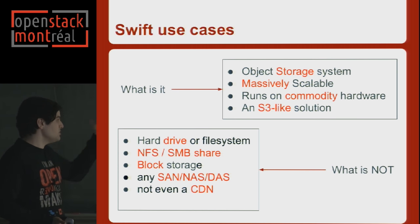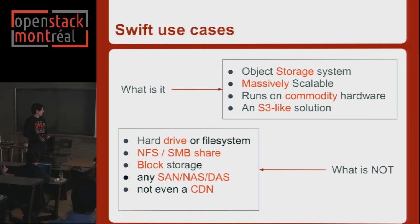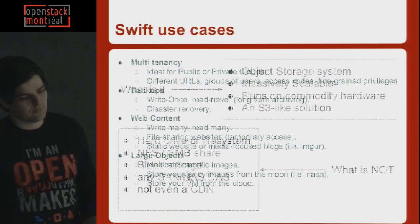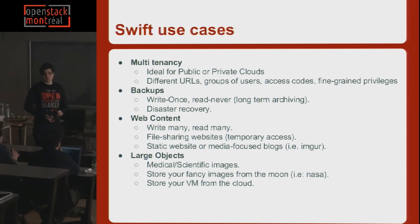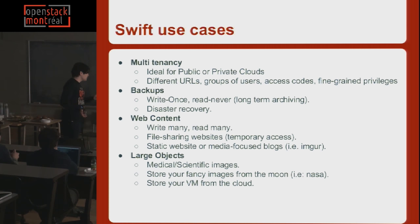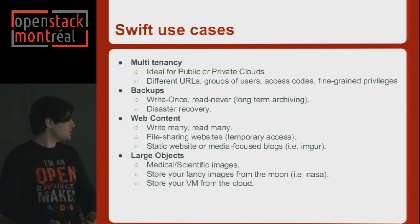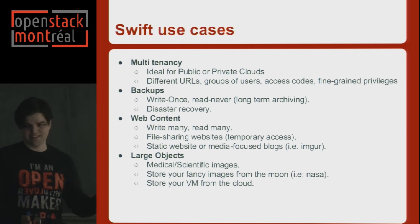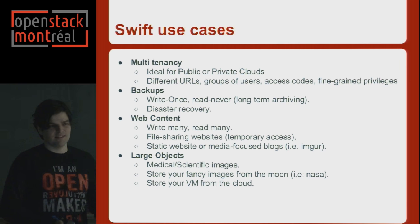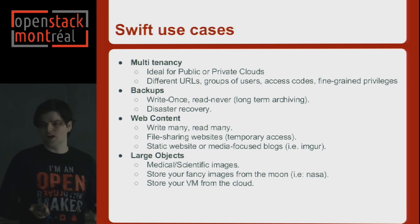Swift appeared as a solution to offer object storage — very scalable, running on commodity hardware. It offers an S3-like solution; it's not a hard drive, NFS share, block storage, or SAN, and it's not a CDN. Use cases include powerful ACL mechanisms to control who accesses what, backups, serving static JavaScript, CSS, and images publicly, and large object support — you can upload a 20 gigabyte file, it gets split and downloaded in parallel for faster performance.